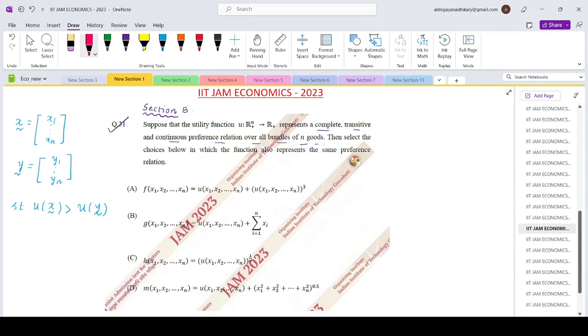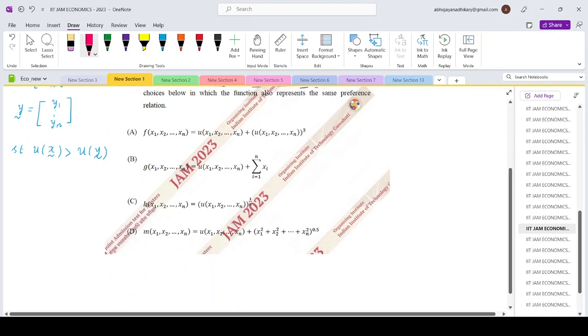Note that since this is a multiple correct choice type of questions with four functional forms given, we will be considering each of them and checking them accordingly. So let's take the functional form A first. So F is basically utility plus cube of the utility.